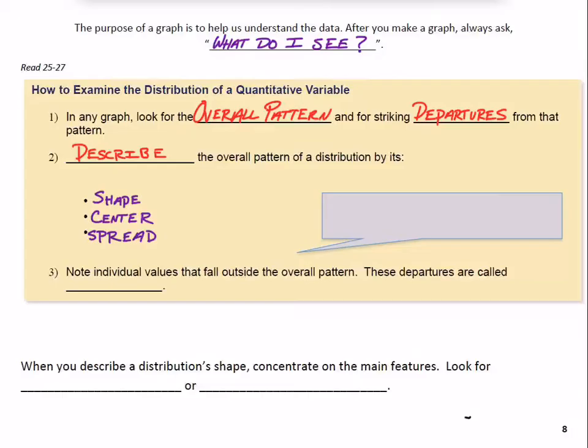How do you remember that, shape, center, spread? Well, there's a lot of times that we use acronyms in AP Stats. One thing we say is, don't forget your socks. S-O-C-S. You can probably guess the S, C, and S goes with shape, center, spread. What the heck would O go with? Well, I actually said that word earlier. Those striking departures we talked about, those individuals would be considered outliers.